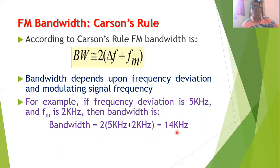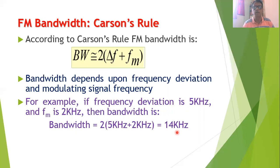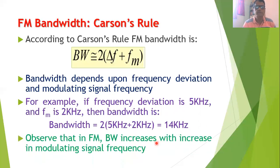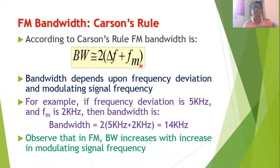FM bandwidth can be determined using either formula, and many times the bandwidth values from each formula differ from each other. Importantly, in FM the bandwidth increases with an increase in the modulating signal frequency. Thank you for viewing this session — hopefully you have understood frequency spectrum in FM and how to determine bandwidth using either the Bessel table or Carson's rule.